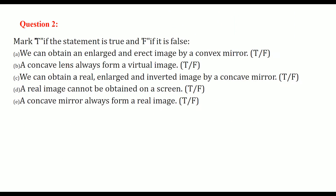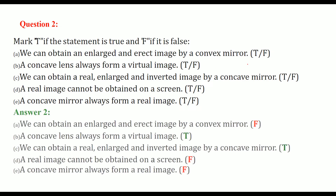True and False: We can obtain an enlarged and erect image by a convex mirror — this is false. A concave lens always forms a virtual image — this is true. We can obtain a real, enlarged, and inverted image by a concave mirror — this is true. A real image cannot be obtained on a screen — this is false. A concave mirror always forms a real image — this is false.